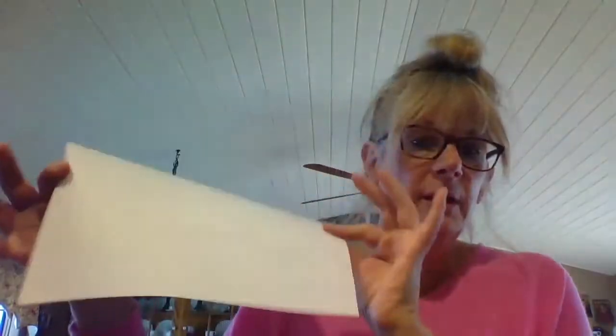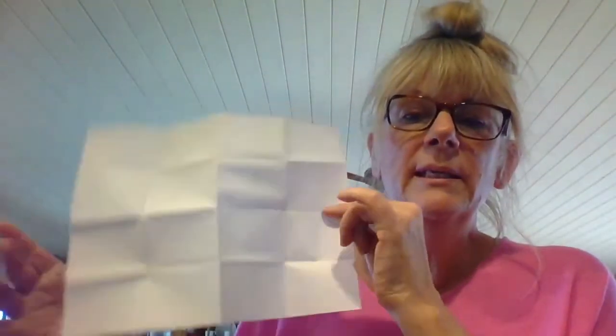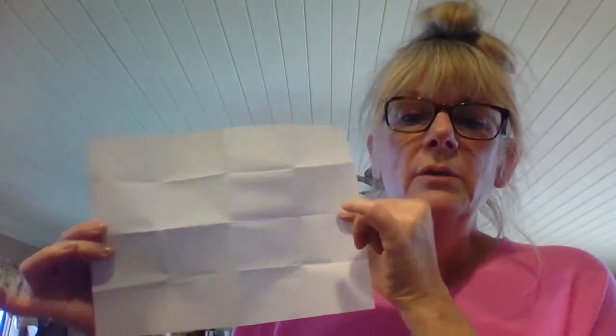We're going to make a bingo board for you. Take a piece of paper. You're going to fold it in half, fold it in half again, a third time, and a fourth time. You're going to end up with 16 squares. So this is going to be your bingo board.